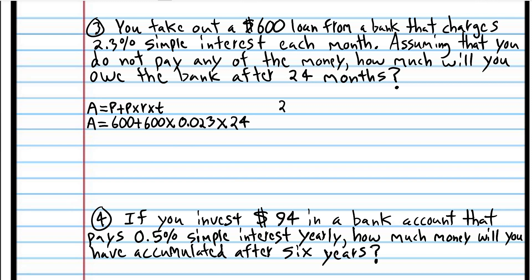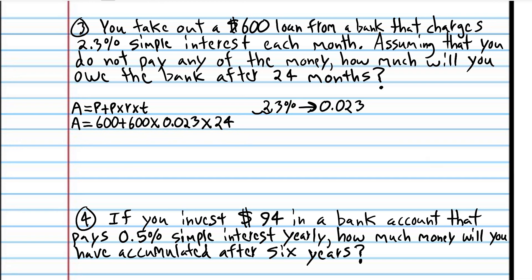Plug in the numbers: principal is 600. 2.3% written as a decimal is 0.023 — we move the decimal two places to the left, always without exception. Then multiply by 24 months since the interest is paid per month. PEMDAS tells us to multiply first, then add.